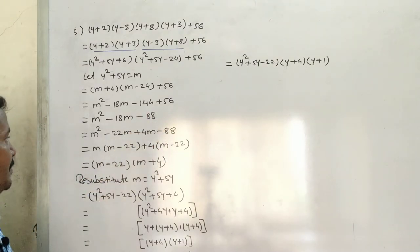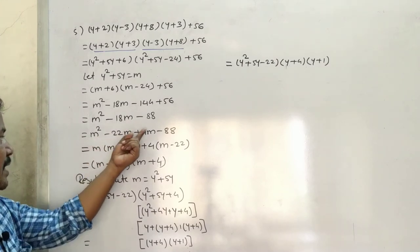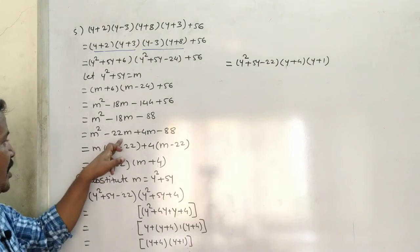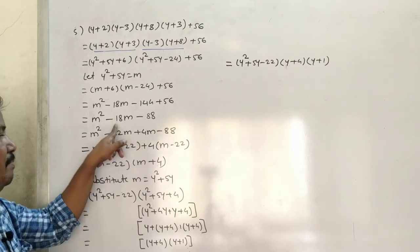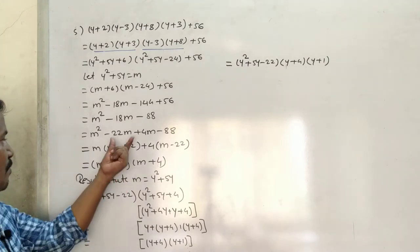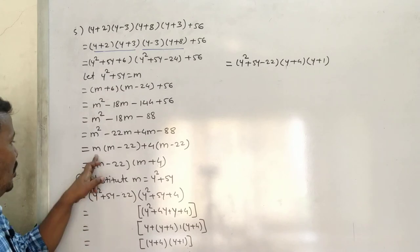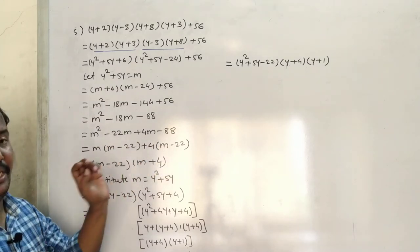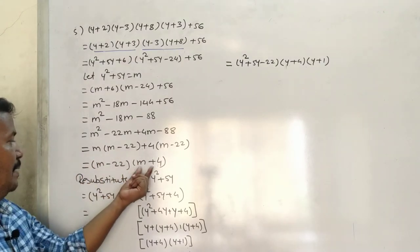So m² - 18m - 88. We split -18m as -22m + 4m, since -22 times 4 = -88 and -22 + 4 = -18. So m² - 22m + 4m - 88. Taking m common: m(m - 22) + 4(m - 22) = (m - 22)(m + 4).